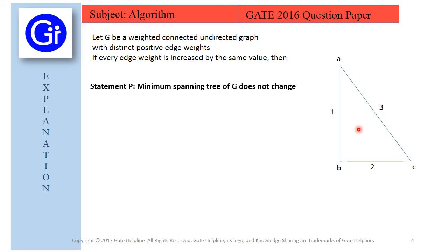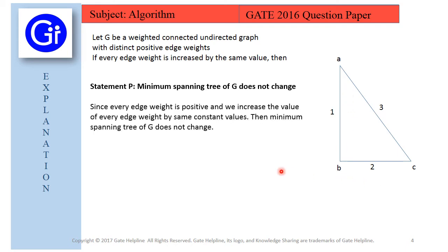So the MST for this graph is A-B-C, and since every edge weight is positive and we increase the value of every edge weight by the same constant value, then minimum spanning tree of G does not change.